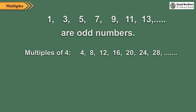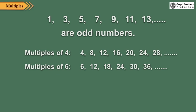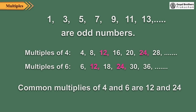Let us observe some multiples of 4 and 6. We see that 12 and 24 are multiples of 4 as well as of 6. So, these are called common multiples of 4 and 6.